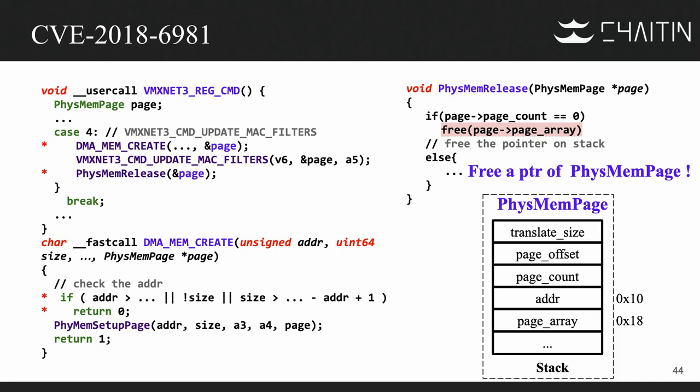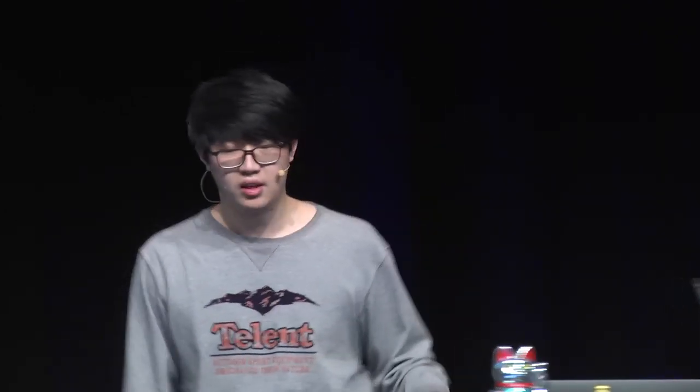We can write an arbitrary field of a physical page structure and have it free a pointer from our physical page structure. We need to find a function to write data onto the stack — this is a standard development pattern: write to the stack when the variable is small, otherwise use the heap. We found a function with this pattern.